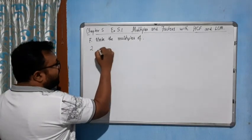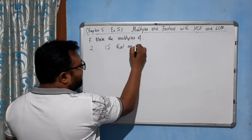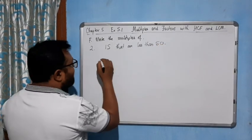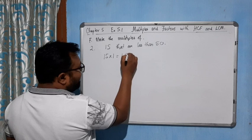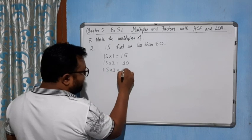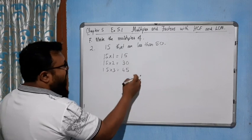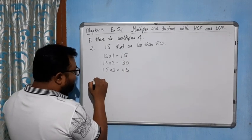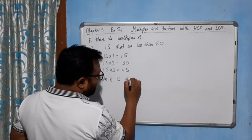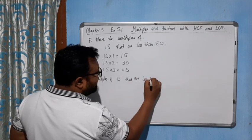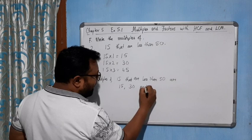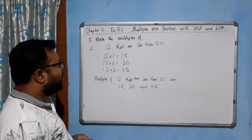Multiples of 15 that are less than 50. Let's try: 15 into 1 equals 15, 15 into 2 equals 30, 15 into 3 equals 45. Since 45 is less than 50, we include it. So the multiples of 15 that are less than 50 are 15, 30, and 45.